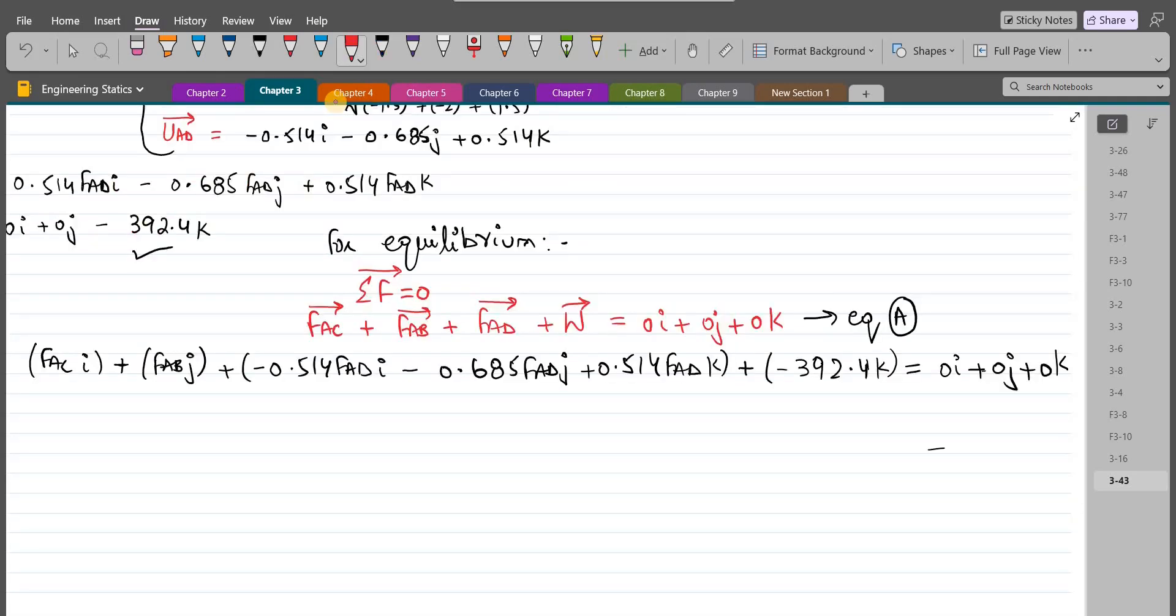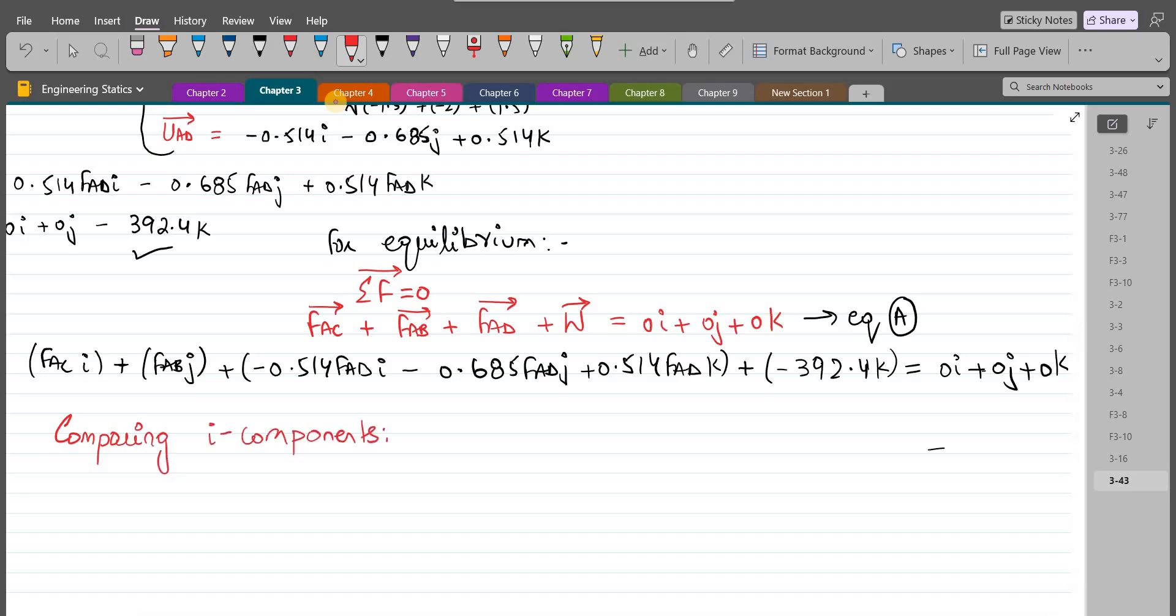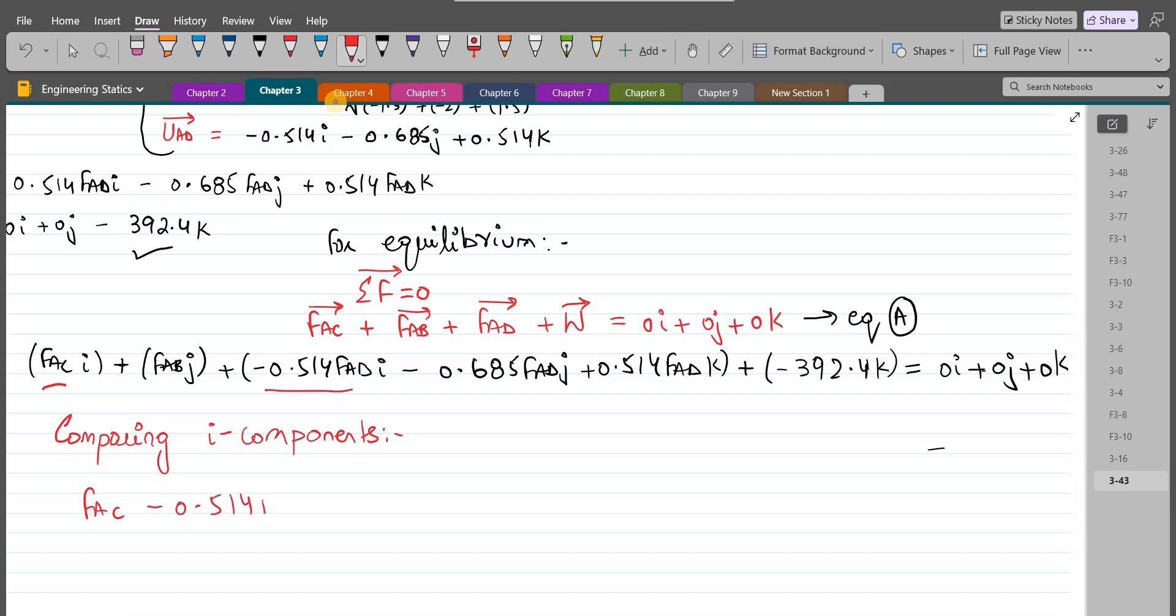Now we are going to compare the I, J, and K components. So comparing the I components, we have FACI minus 0.514FADI equals 0. Let's call this equation 1.